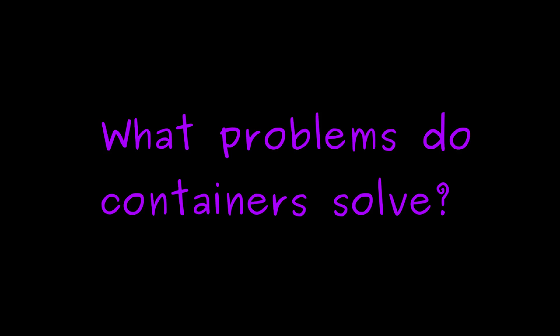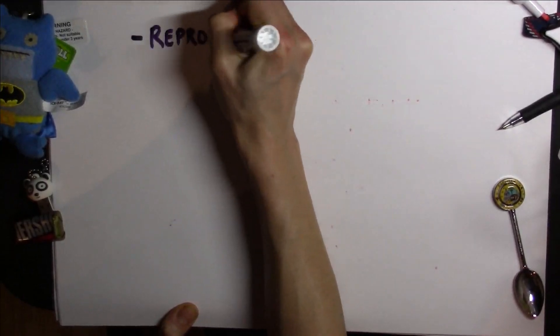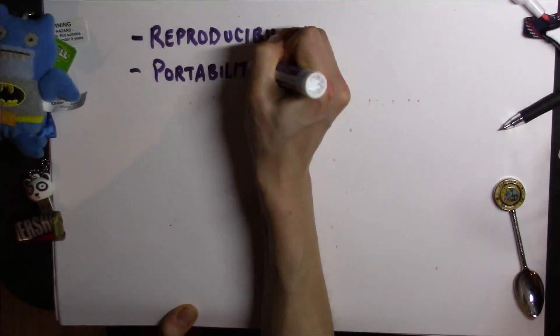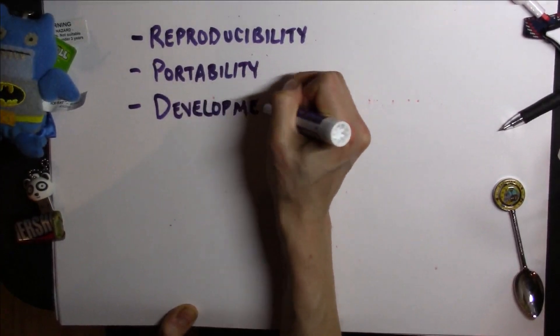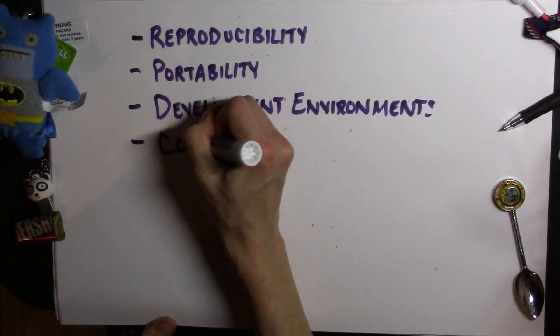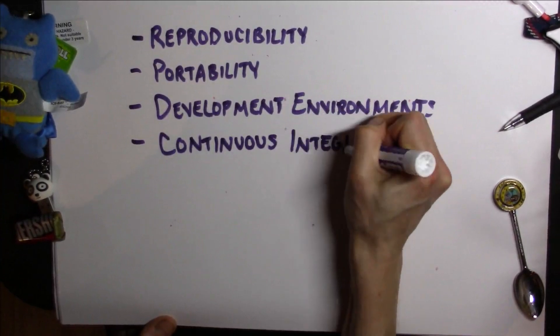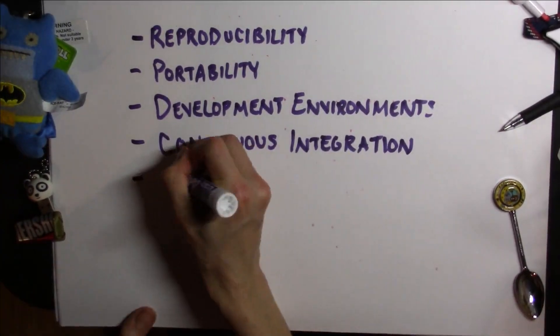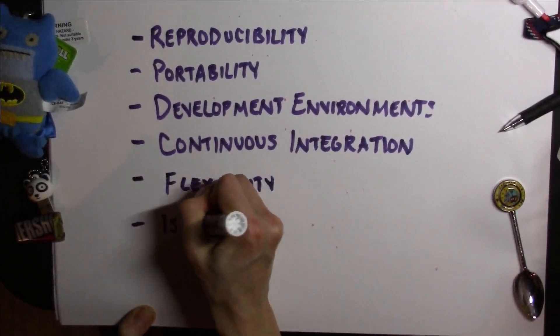Generally, the things containers are good for are reproducibility, portability, development environments, continuous integration, flexibility, and isolation. Let's break these down a little bit. First, let's talk about reproducibility.